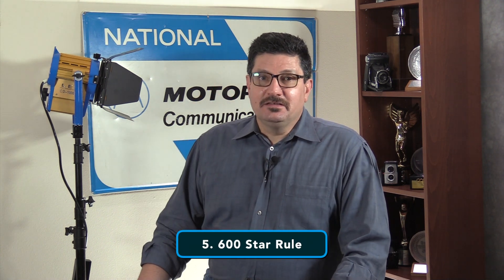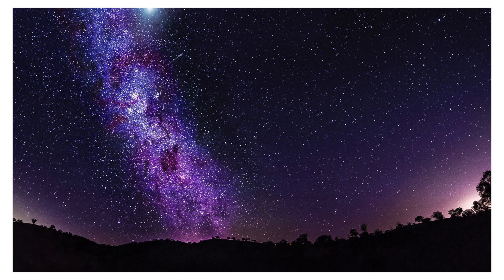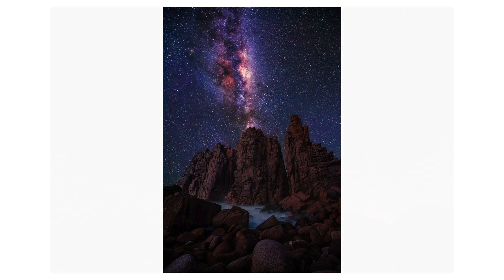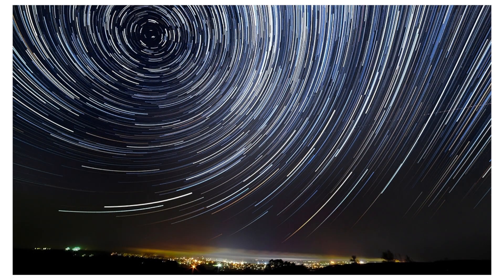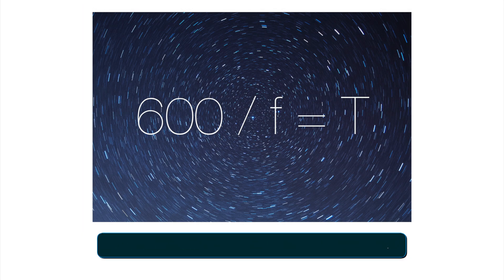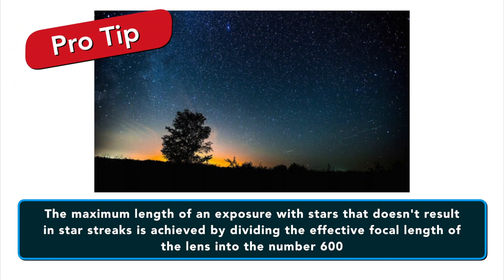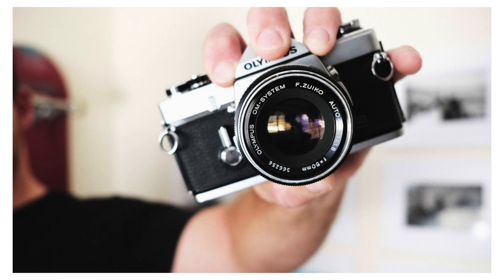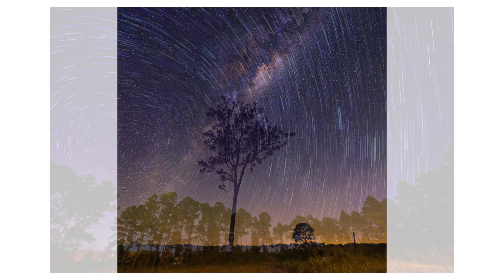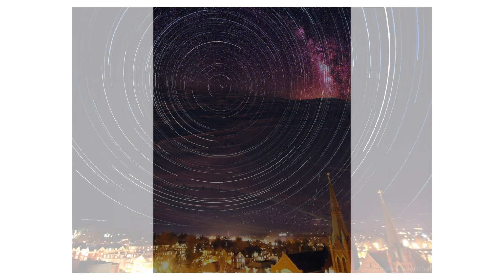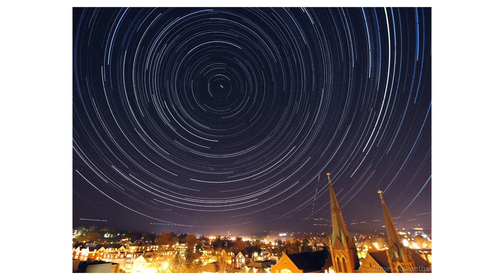Finally, number five: the 600 star rule. Star photography is booming. The first decision when shooting stars is whether you want them frozen in place or streaking across the frame. To determine the longest possible shutter speed before stars appear in motion, use this formula: 600 divided by the focal length equals the maximum shutter speed. A 50mm lens on a 35mm camera gives 600 divided by 50 equals 12 — a 12-second exposure before streaks are noticeable. If you do want star streaks, go longer than that exposure time.